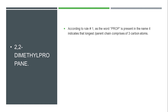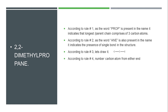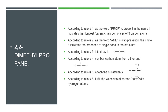The next part is 2,2-dimethylpropane. This compound has 'prop' in the name, indicating 3 carbon atoms, and 'ane' indicating single bonds. After drawing the carbon skeleton, numbering it, and attaching the substituents, we fill the remaining valences of the carbon atoms with hydrogen atoms. This gives us the complete structure of 2,2-dimethylpropane.